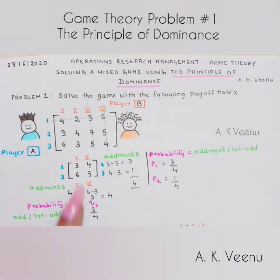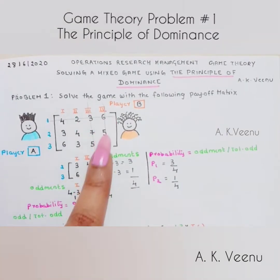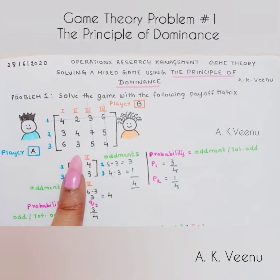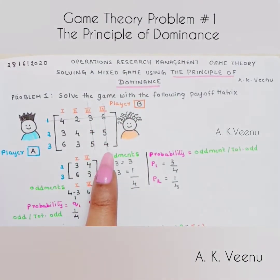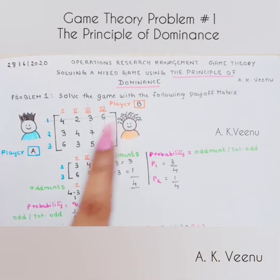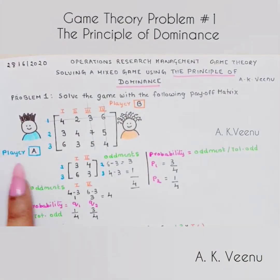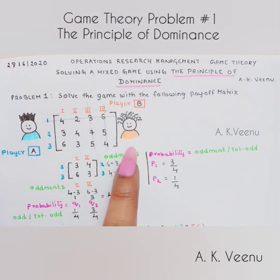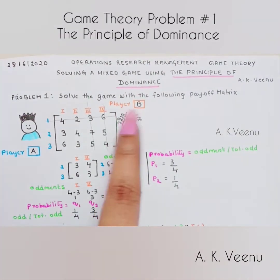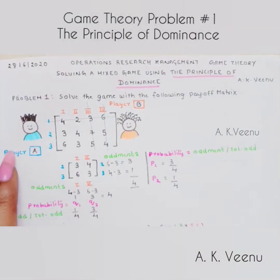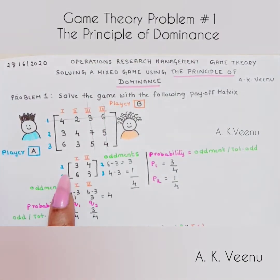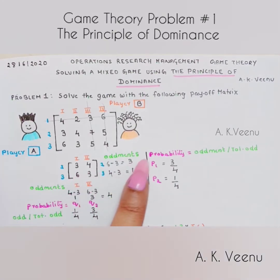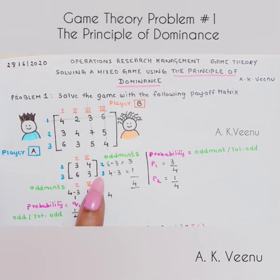To summarize, we have solved a 3 by 4 payoff matrix with no saddle points using the principle of dominance. We eliminated the dominating columns of player B and the dominating rows of player A. The idea is to minimize the losses of player B and maximize the gains of player A. We then reduced the matrix to a 2×2 matrix and found the oddments by subtracting elements of the opposite rows and opposite columns.